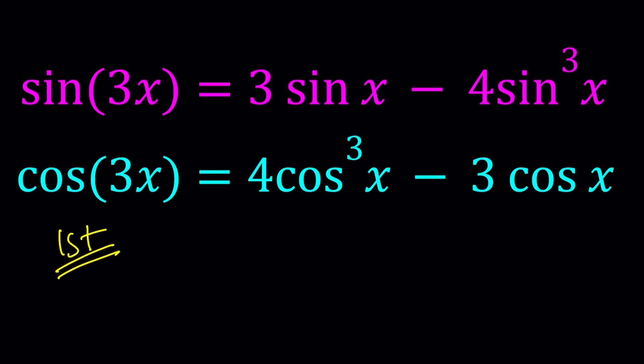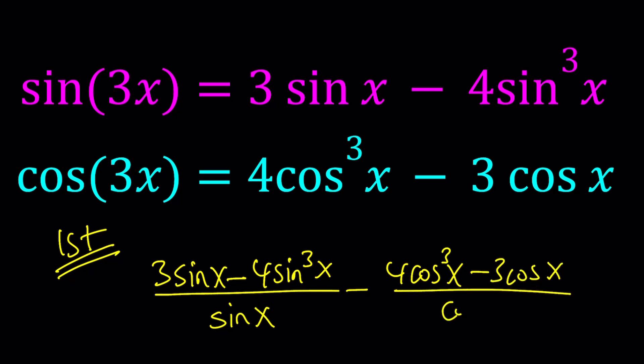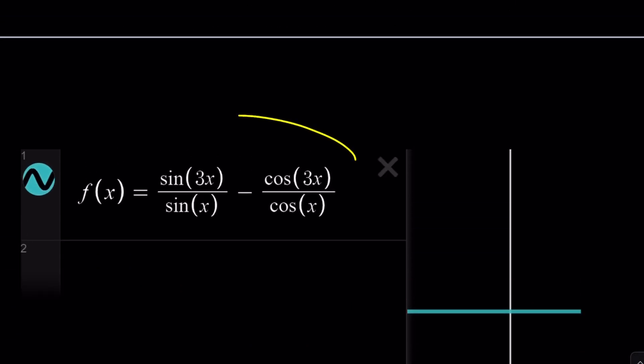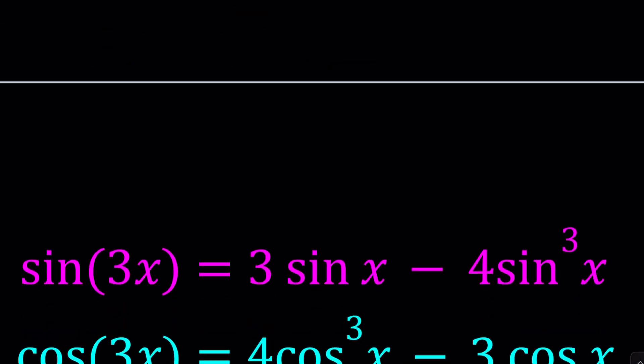So first we need to look at the ratio of sine 3x divided by sine x. And as you can see, sine 3x can be written in terms of sine x, which is nice, because what we want to do is we want to divide it by sine x. And same thing goes for cosine of 3x. It's written in terms of cosine x only. So let's go ahead and take that and divide it by cosine x.